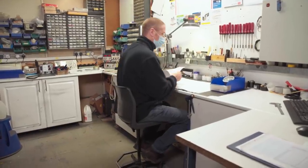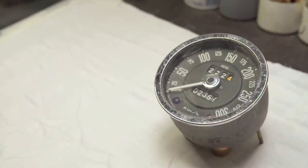Today we're going to convert an Aston Martin DB5 speedometer from kilometres to miles per hour.